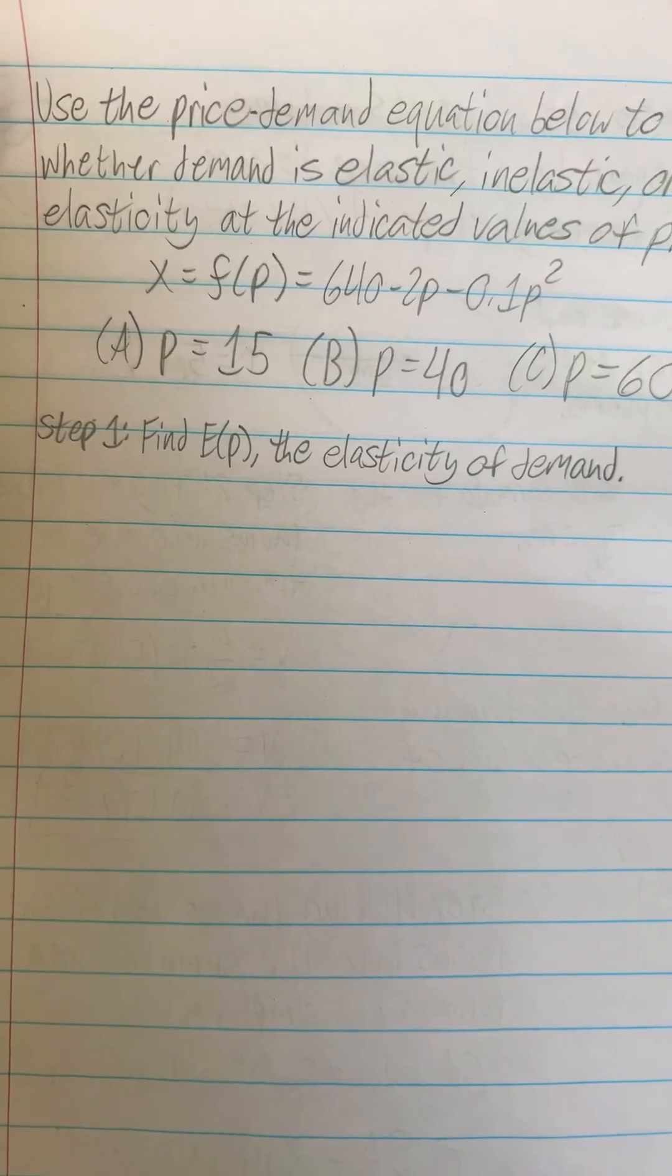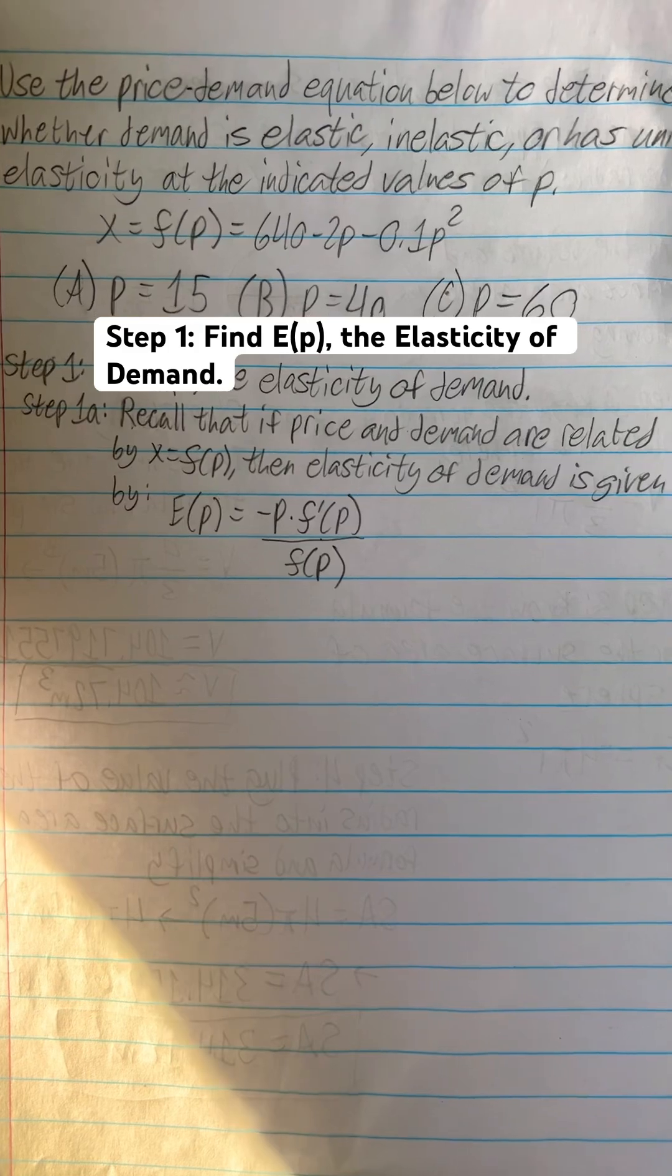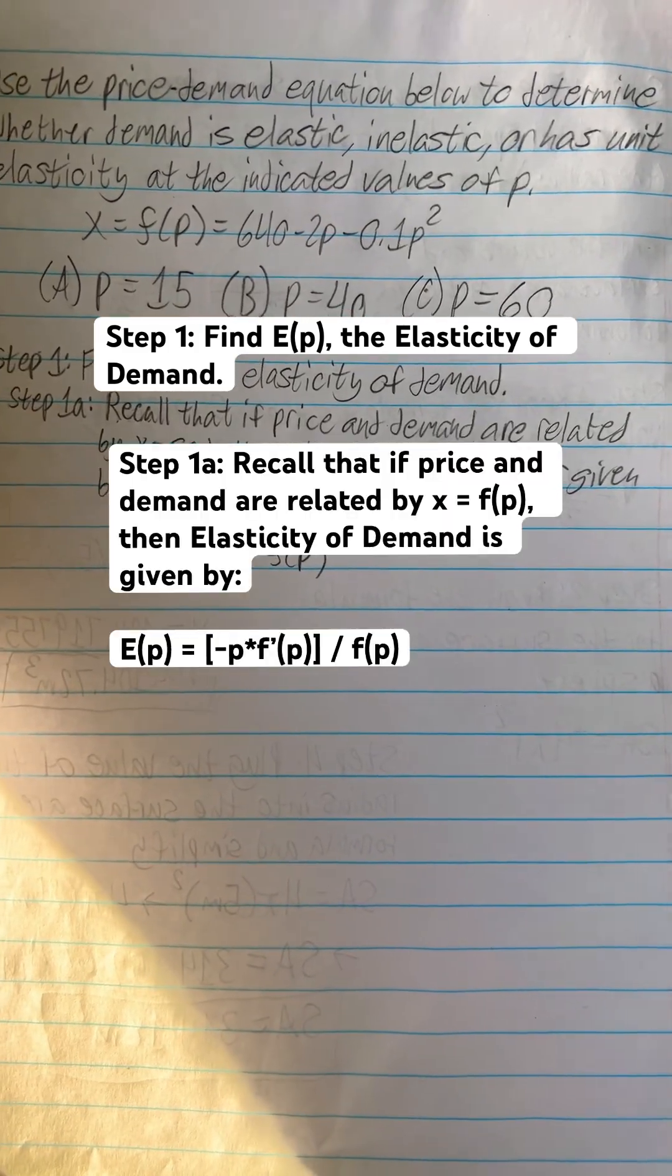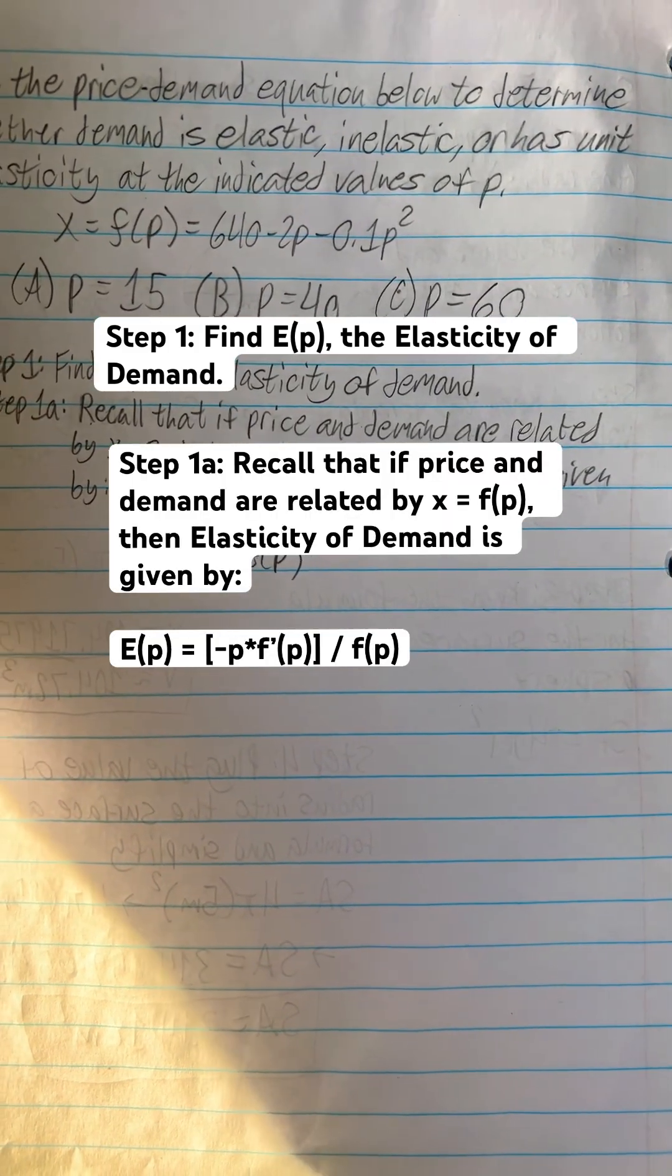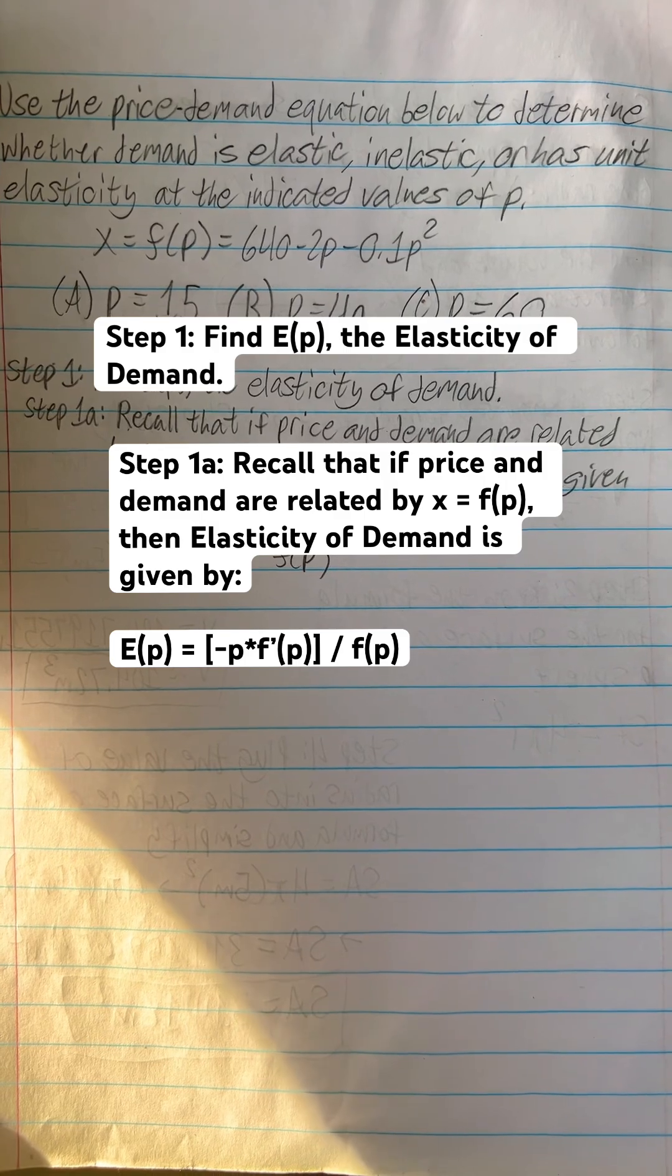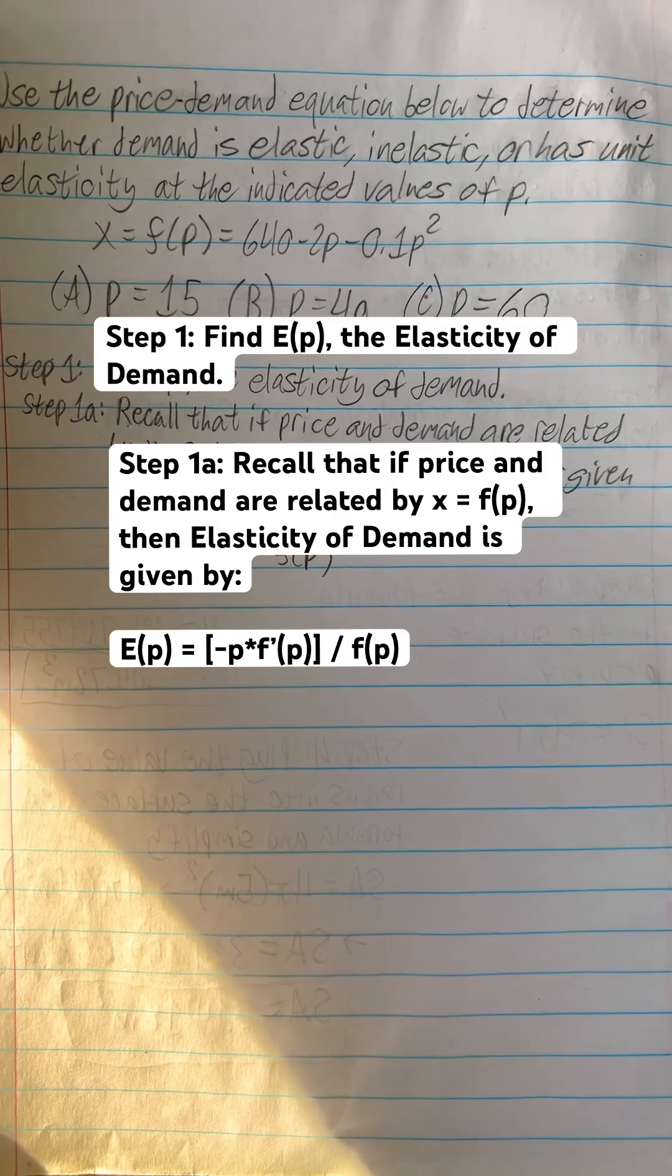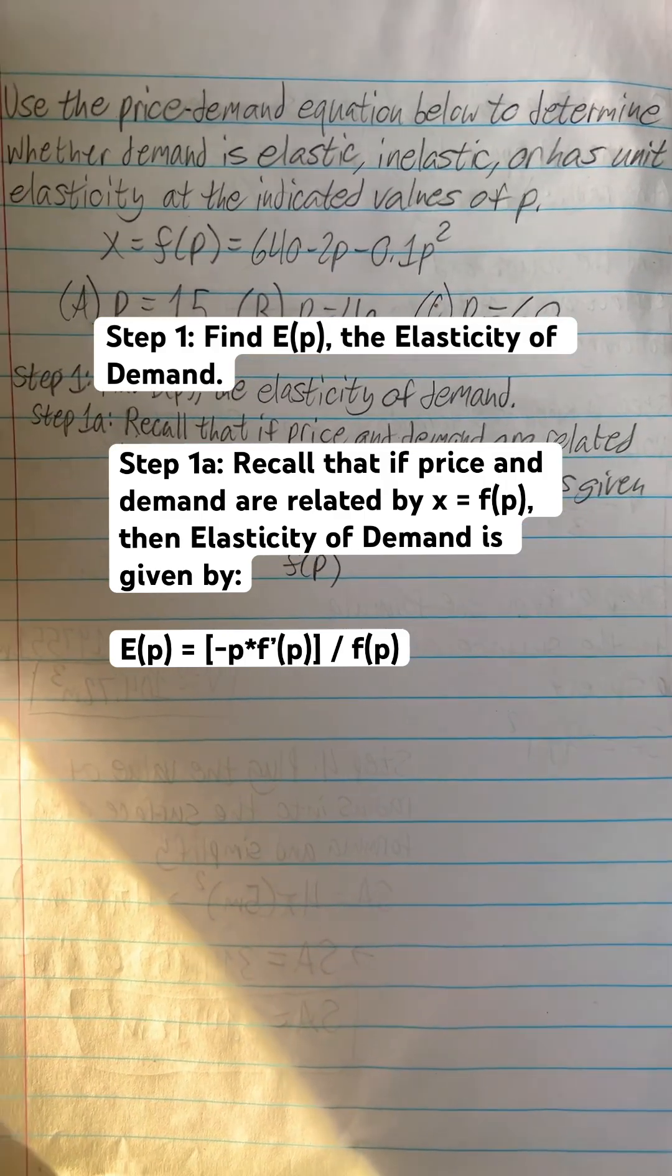Step 1 is to find E of P, the elasticity of demand. Step 1A is to recall that if price and demand are related by X equals F of P, then the elasticity of demand is given by E of P equals negative P times derivative of F of P divided by F of P.